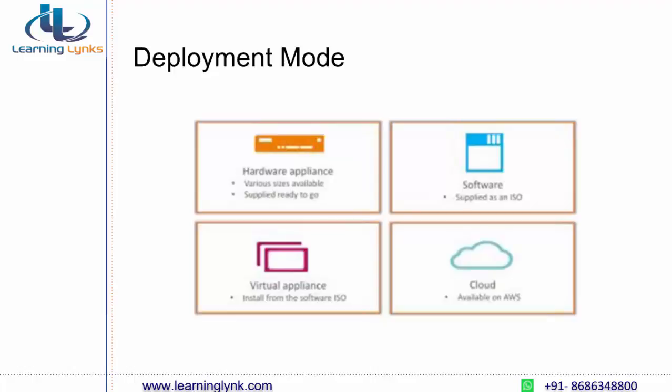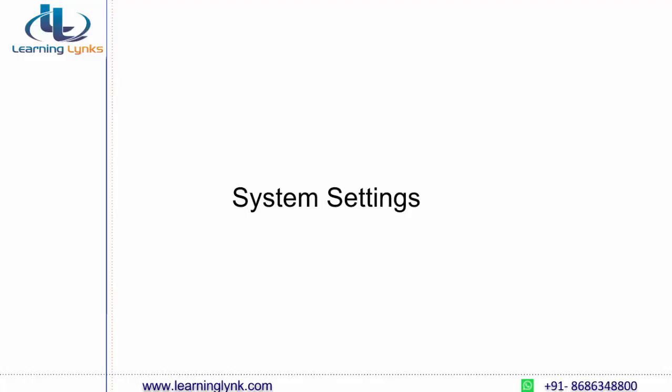Another option is you can deploy this into the cloud. You can purchase cloud resources from vendors like Amazon and deploy Sophos UTM there to control the entire network. In the next module, we cover system settings — how you can initially set up your system, put up the hostname, and configure the initial requirements so that the device can connect to the internet and to nodes over your network.